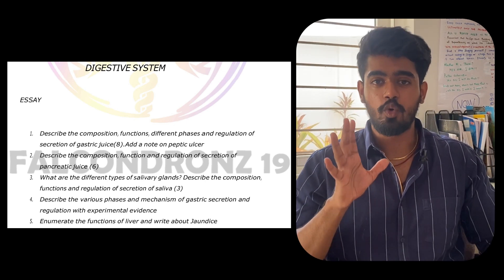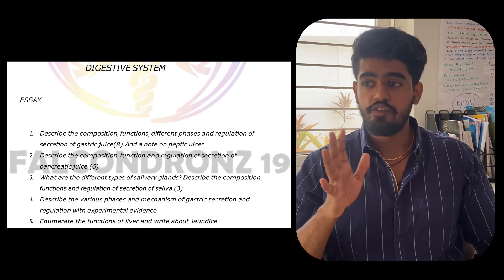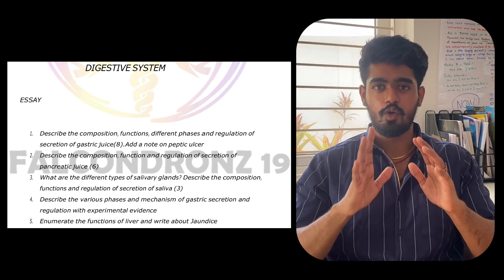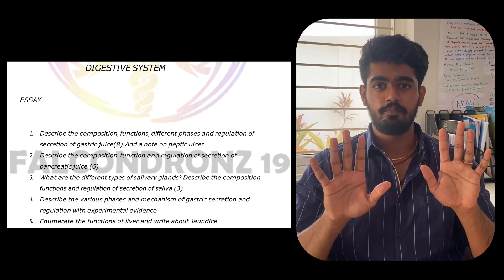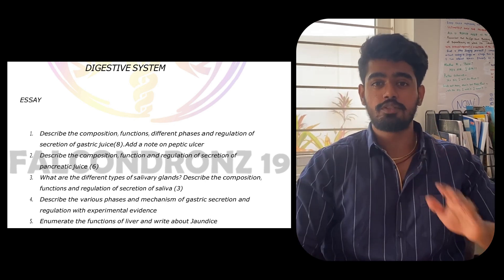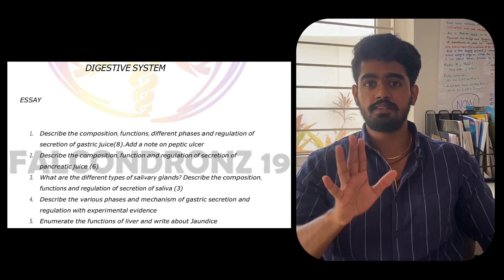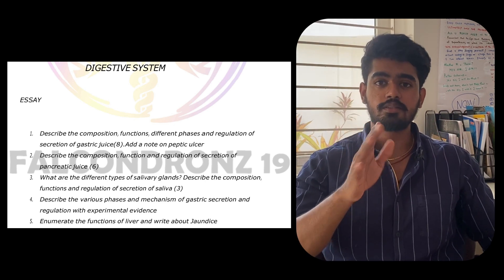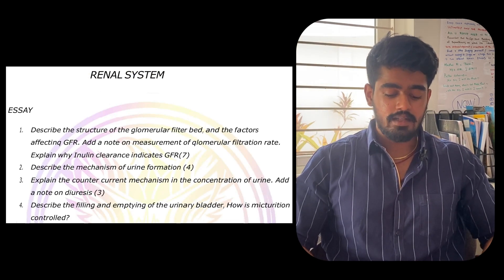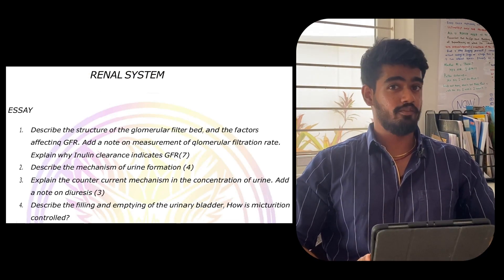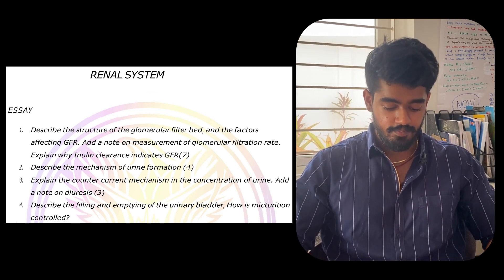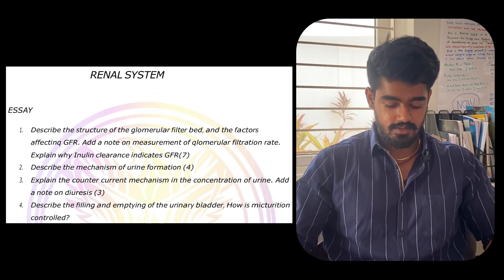This video is meant for people who just want to pass — if you're aiming for a distinction, obviously you have to study every single question and use a different question bank. I'm telling you the most important questions to study; you can't miss these if you want to pass. For the renal system, GFR is very important and may come as an essay. Also study urine formation and diuresis.